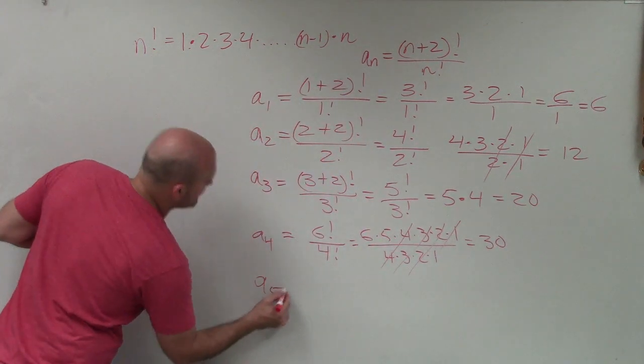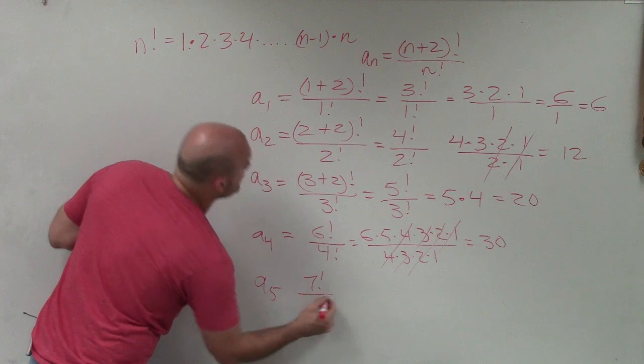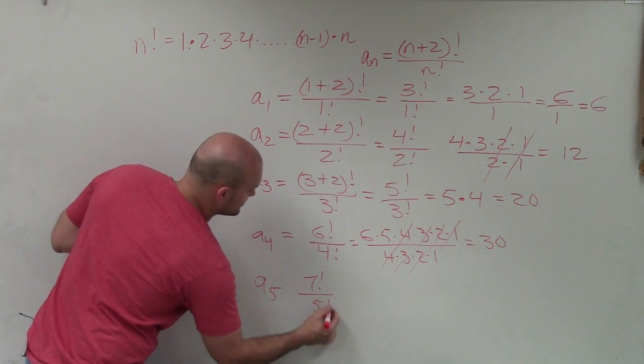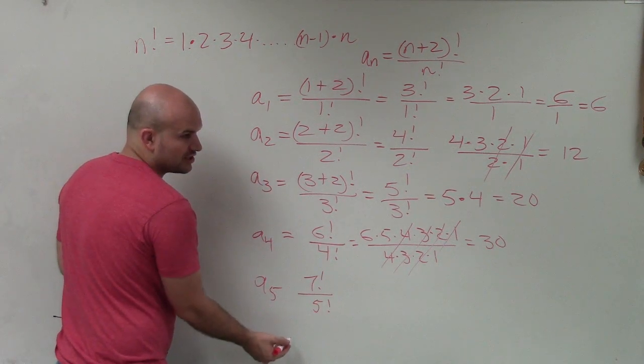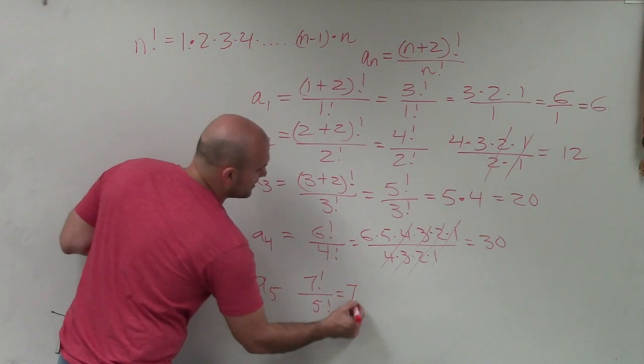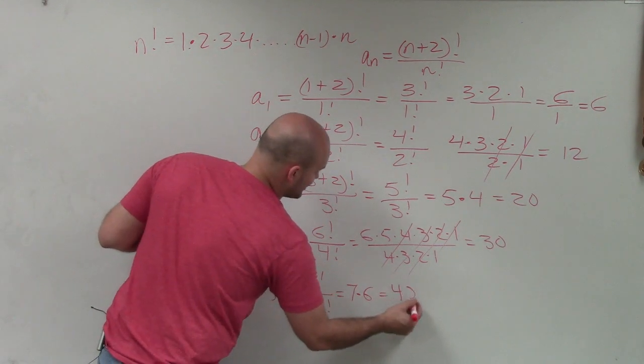And I'll do a sub 5 kind of simple here. 5, that's going to be 7 factorial over 5 factorial. Again, the 5 factorials are going to divide out, so I'm just left with 7 times 6, which is 42.